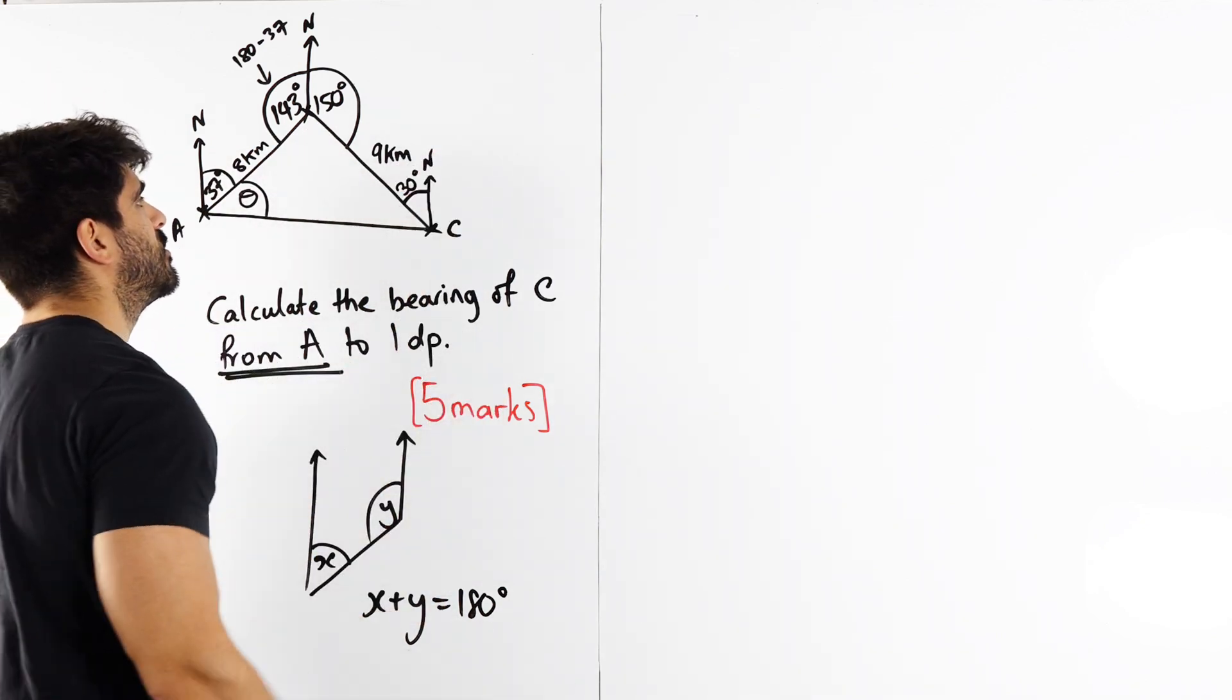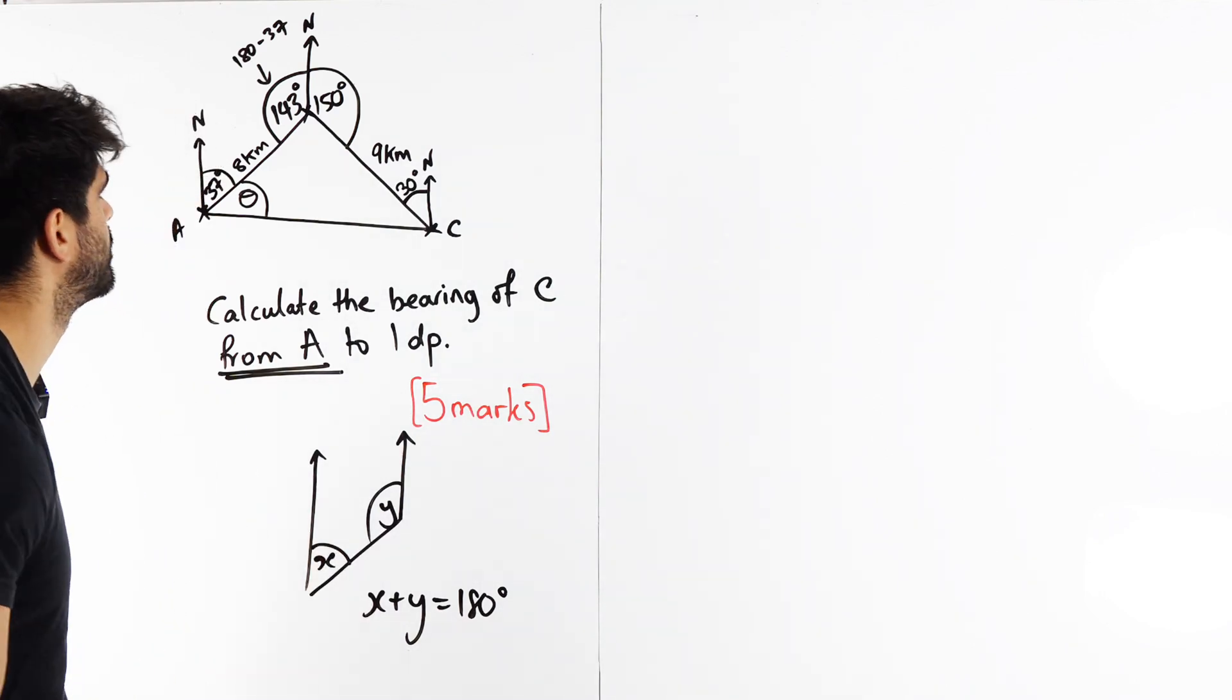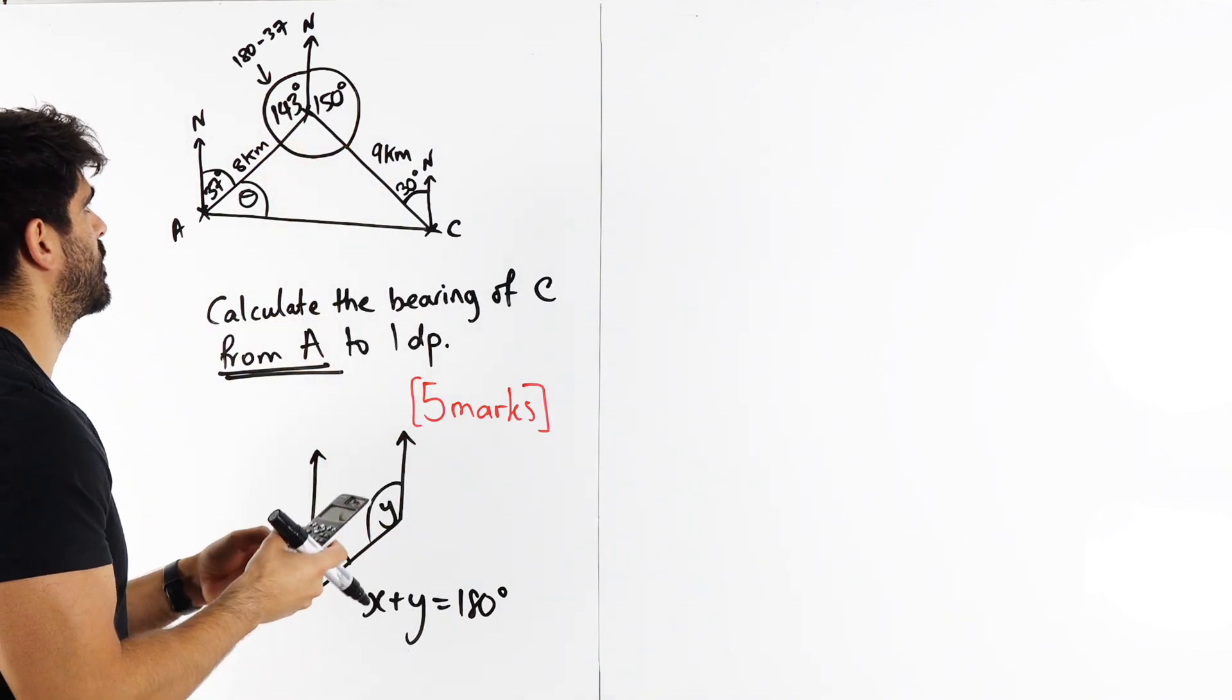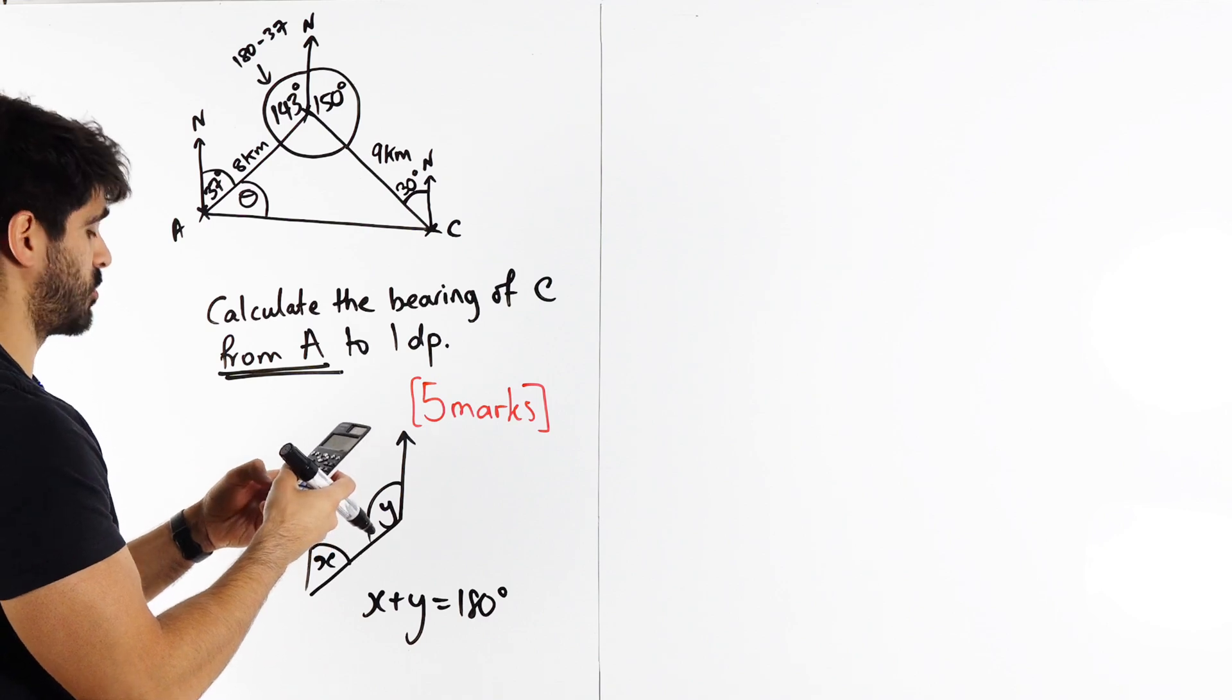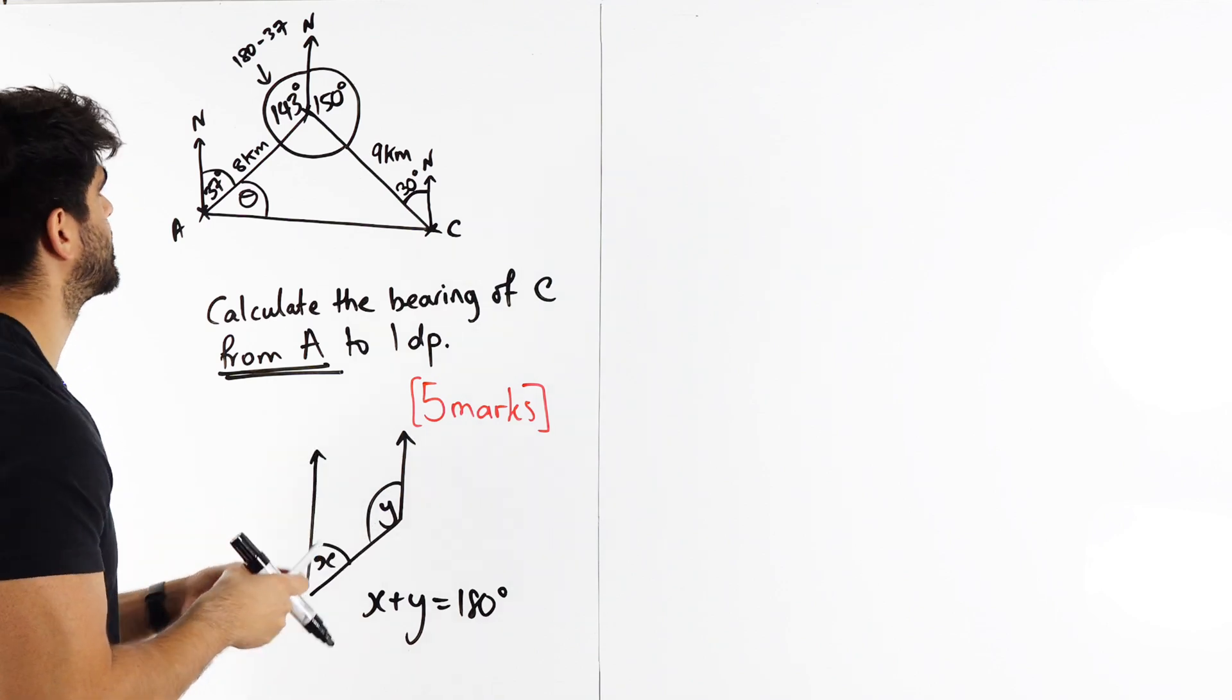Now, is it going to be useful to us? Maybe not. But why not just put on your diagram anyway? So we can now work out this angle by just doing 360 minus the other two angles. 360 minus 143 minus 150 is 67 degrees.